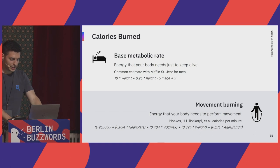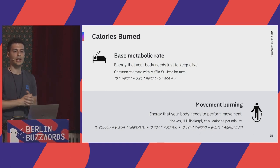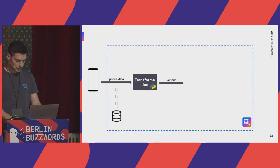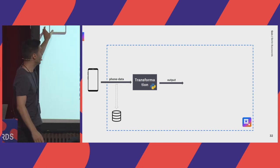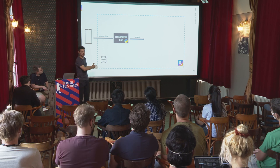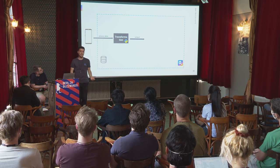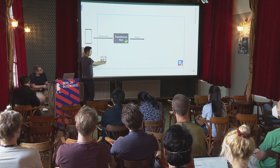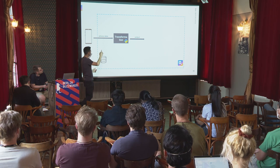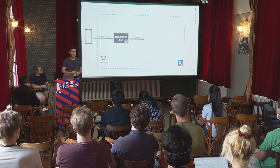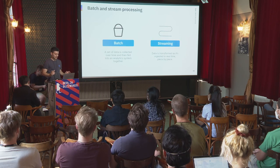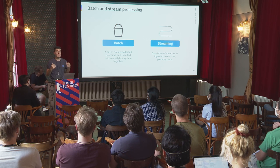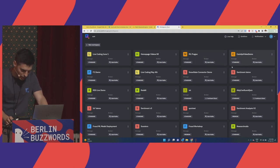I'm going to create a transformation that generates real-time calorie burn estimates as I speak. Thomas built the pipeline: real-time data from the phone into a topic, persisted into a database. As a data scientist, I can access that database for historical batch analysis, or I can react to real-time data using the microservices approach. I'm going to build the transformation first in batch, then convert it to streaming — we'll keep following this batch-versus-streaming comparison throughout.